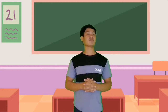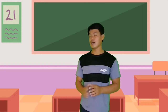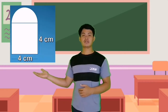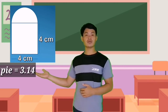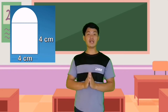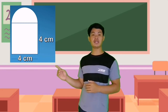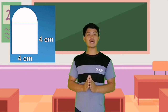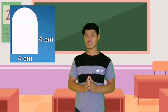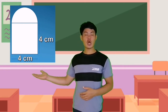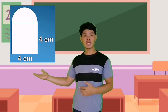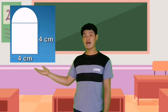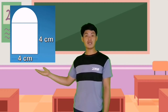Now let us have some examples. Find the area of this composite figure. Use 3.14 as the constant value of pi. To find the area of this composite figure, you need to identify first the shapes that compose the figure. In this figure, we have two shapes: half of a circle and a square. Now let us separate these shapes with their corresponding formula.